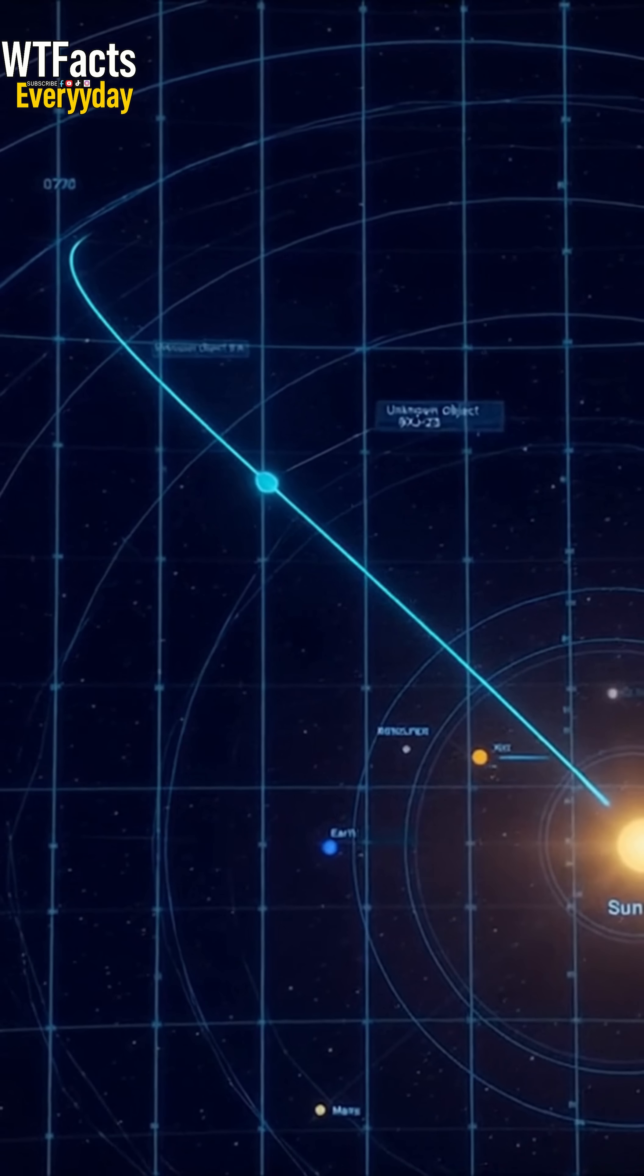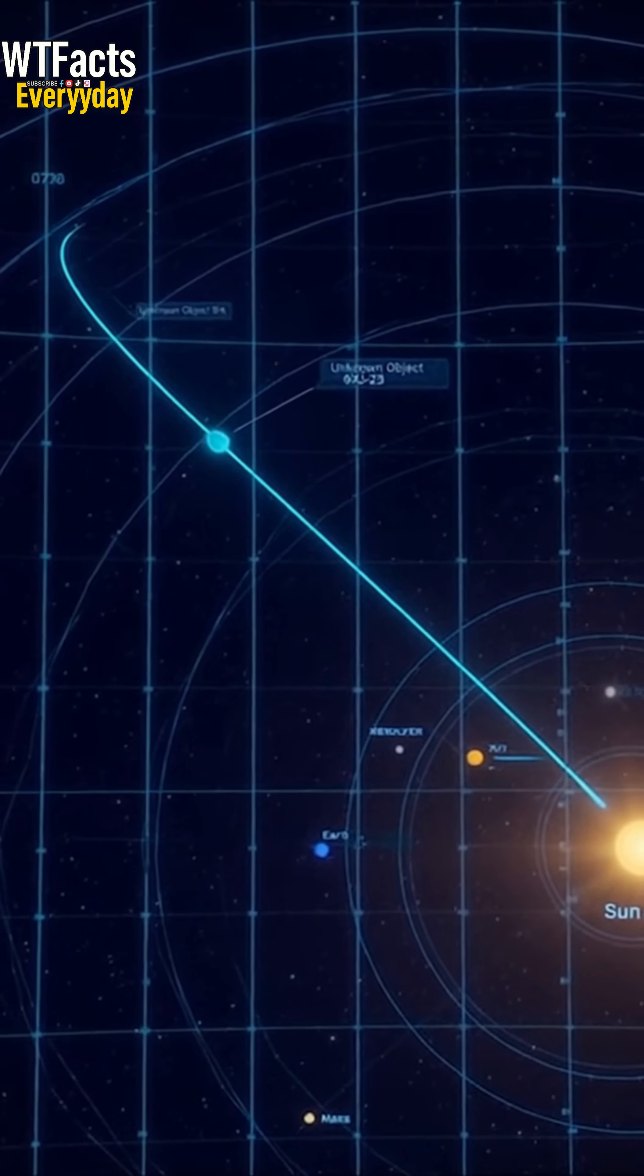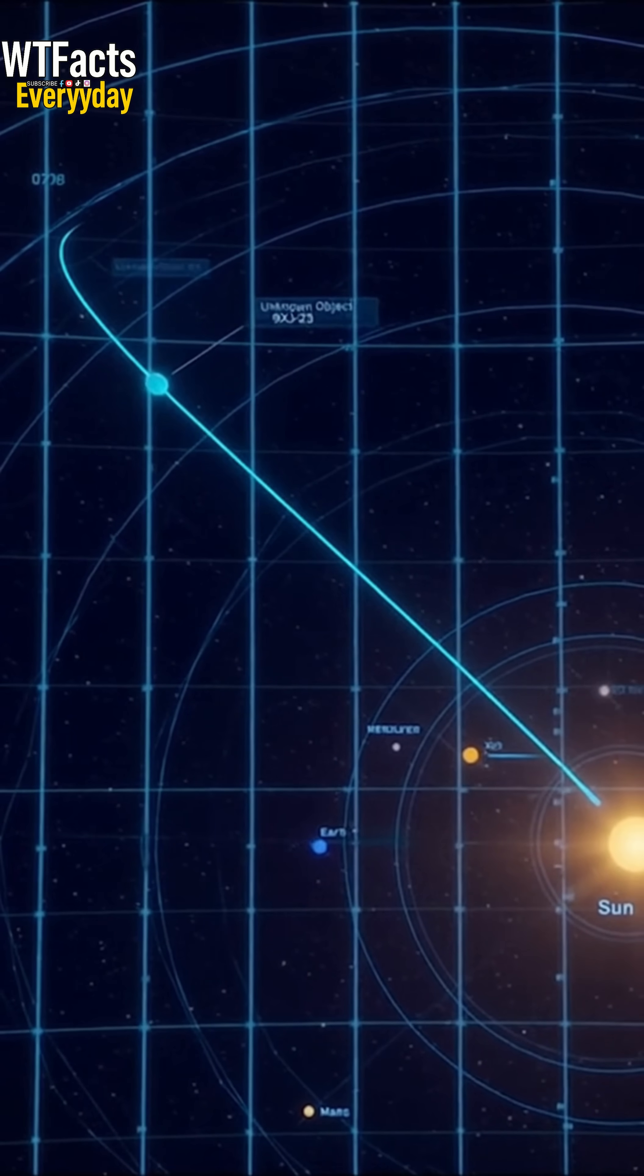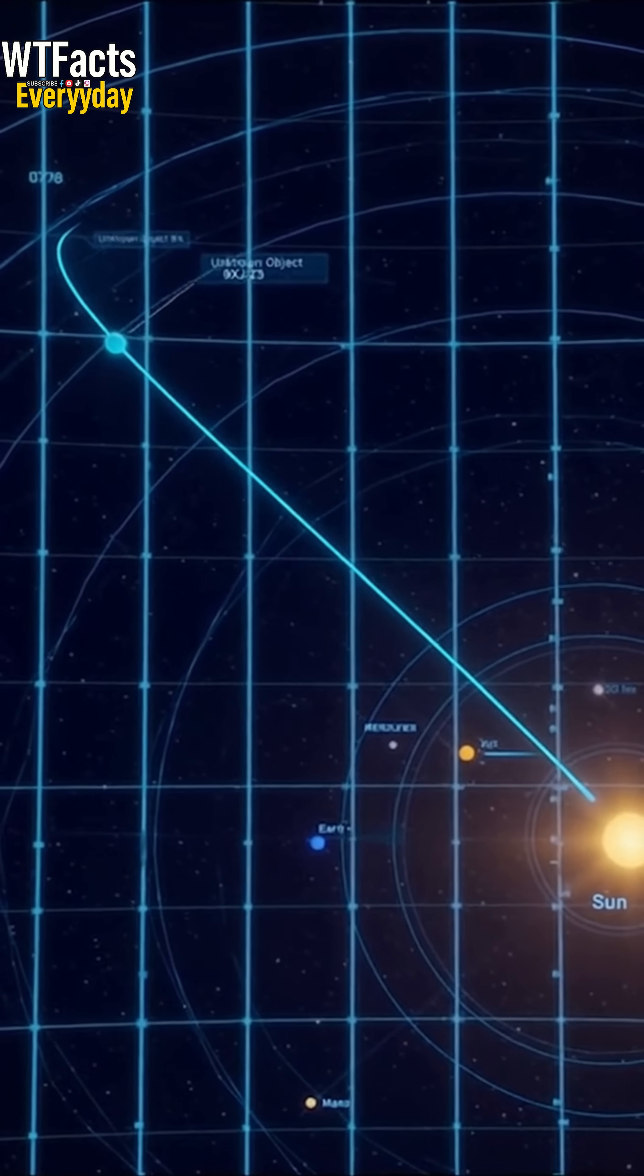Three-Eye Atlas is only the third confirmed interstellar object ever found. It's moving too fast to be from around here, meaning it came from another star system.